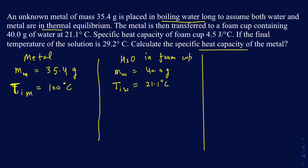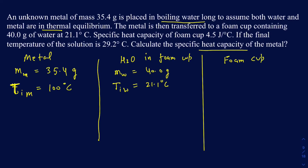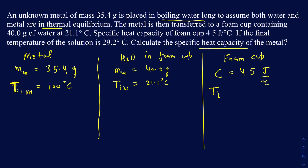We're also given the specific heat capacity of the foam cup, so that comes into play here. There will be times when they tell you to consider the heat capacity of the foam cup as zero — treating it as a perfect insulator — but that's very unlikely. So I want to make sure I include that term. The specific heat capacity of the foam cup is 4.5 joules per degree Celsius. Since the foam cup is in the cooler water, both are at thermal equilibrium, so the initial temperature of the foam cup is also 21.1 degrees Celsius.